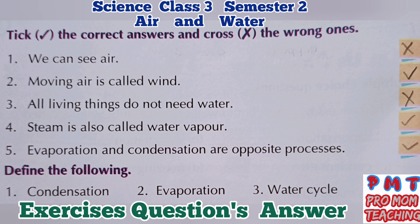Third: all living things do not need water — wrong. Fourth: steam is also called water vapor — yes, it is true. Fifth: evaporation and condensation are opposite processes — yes, it is true.